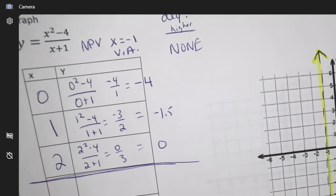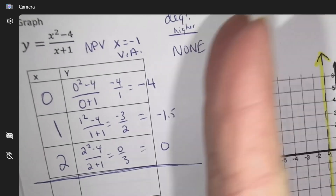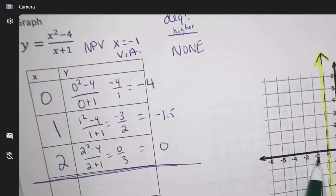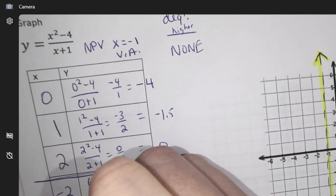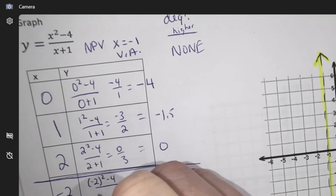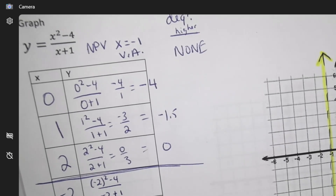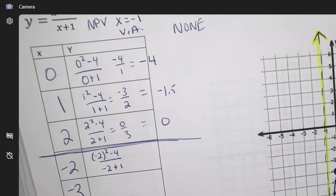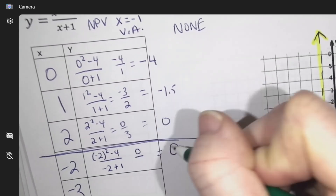On your test or exam, you are going to get graded for the patterns in each section — that would be one pattern. Now, what's the pattern on the other side? I'm going to plug in negative two and negative three. Negative two squared is four, four minus four is zero, so that point is just zero no matter what.